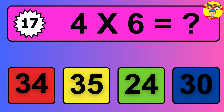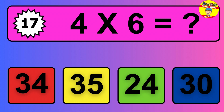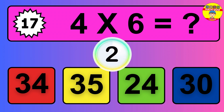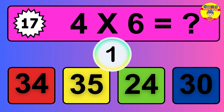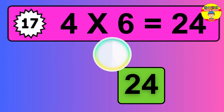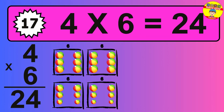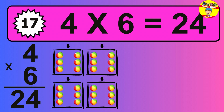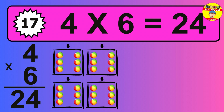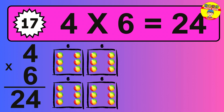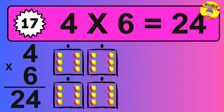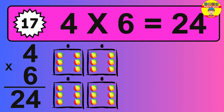Question 17. 4 times 6 equals what? So the answer is 4 times 6 is 24. To calculate, we have 4 groups with 6 balls each one. So how many balls do we have? 24 balls.